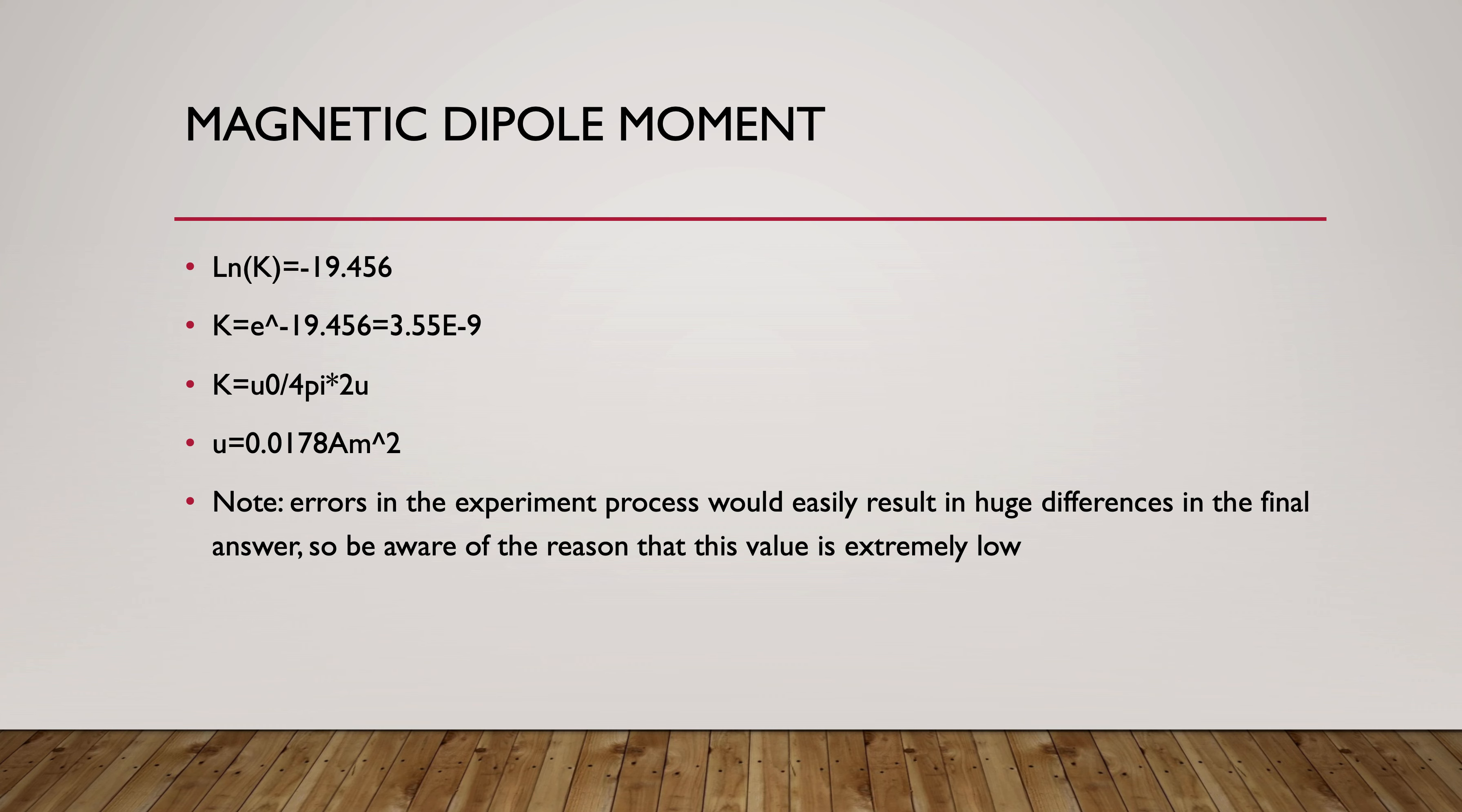You need to be aware that because of errors in the experiment process, it will easily result in huge differences in the final answers. Since we have k equals e^(-19.456), that will result in a huge error in this final value.